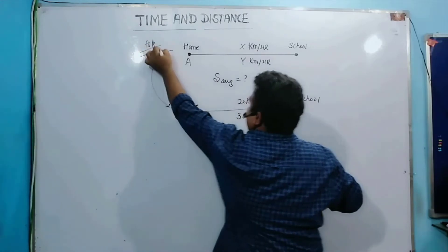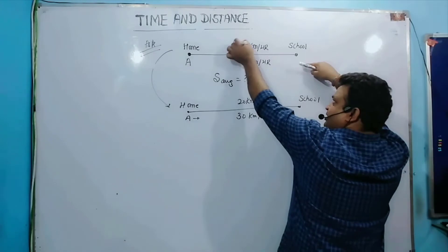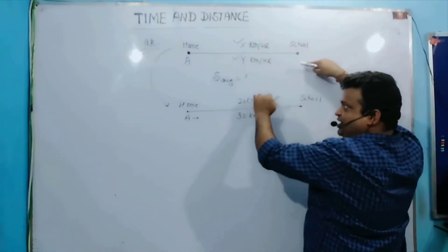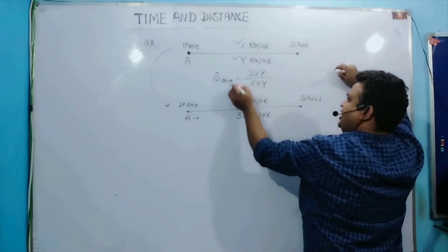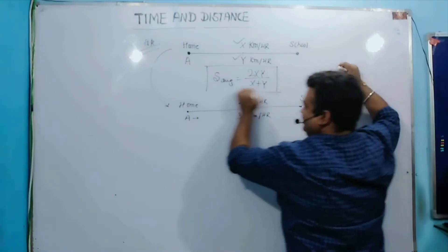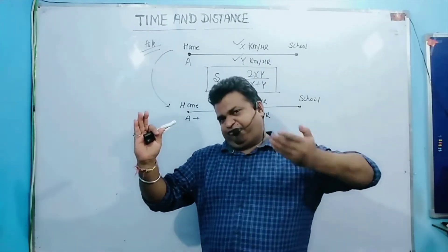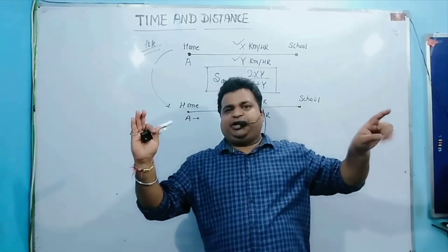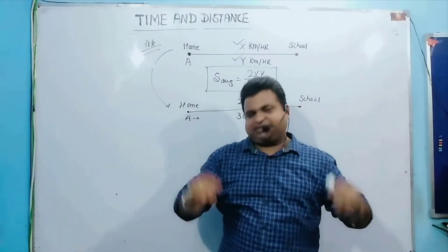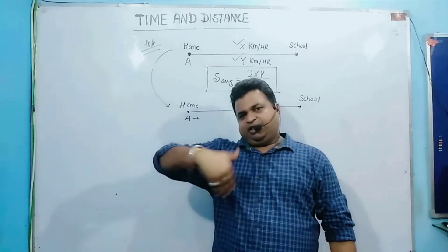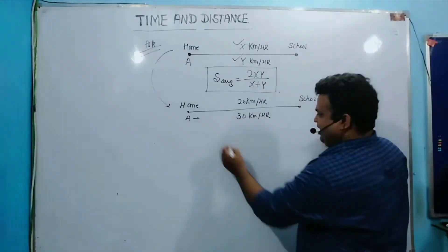Whenever the distance is the same but the onward journey speed and the return journey speed are different, at that time your average speed formula is 2xy divided by x plus y. Yes, you need to remember this. This is the trick to solve whenever you cover the same distance with different speeds — onward journey different speed, return journey different speed. Remember this formula: 2xy divided by x plus y.